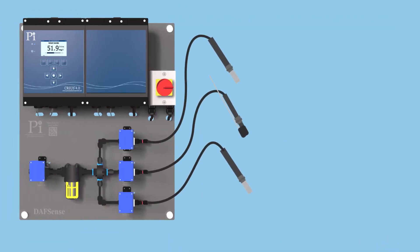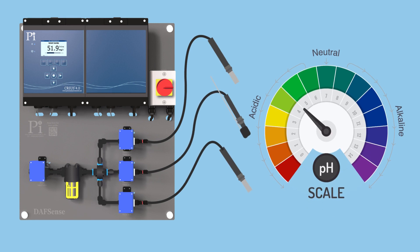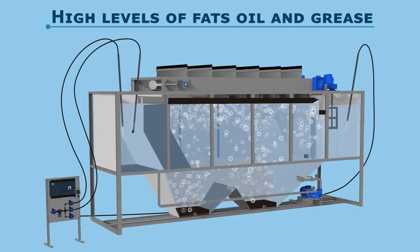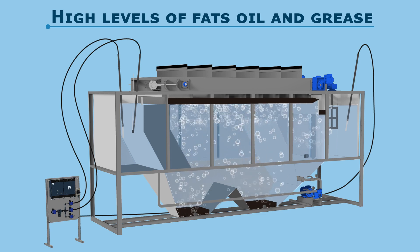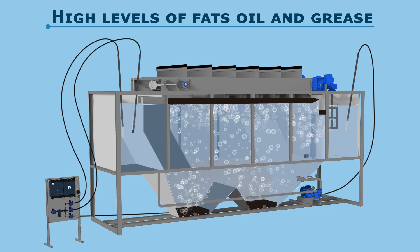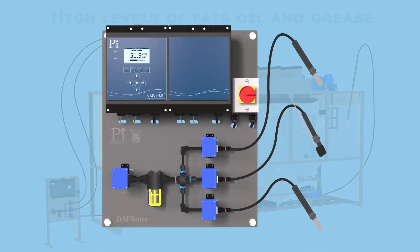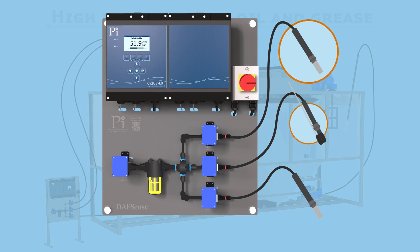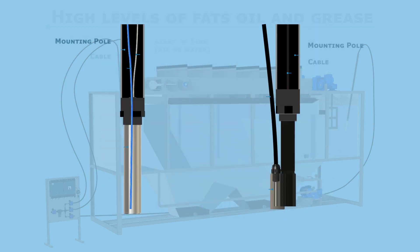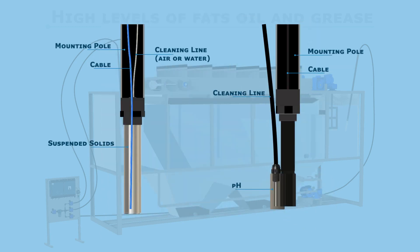At the same time, DAF Sense measures and controls the pH. Some industrial DAFs are difficult measurement environments due to the high levels of fats, oil and grease, or FOG, which is why all the sensors used by DAF Sense come with auto-cleaning.